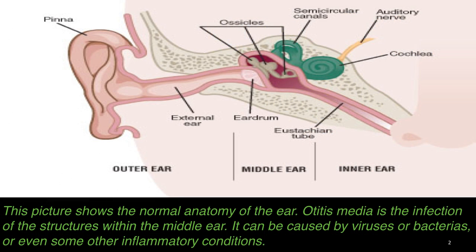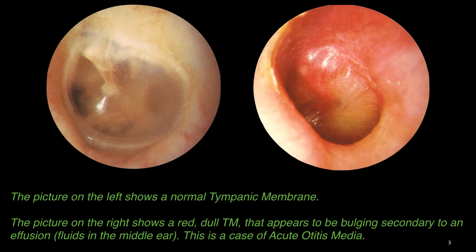This picture shows the normal anatomy of the ear. Otitis media is the infection of the structures within the middle ear. It can be caused by viruses or bacteria, or even some other inflammatory conditions. The picture on the left shows a normal tympanic membrane. The picture on the right shows a red, dull tympanic membrane that appears to be bulging secondary to an effusion — fluid in the middle ear. This is the case of acute otitis media.